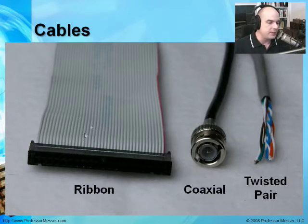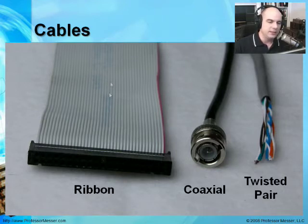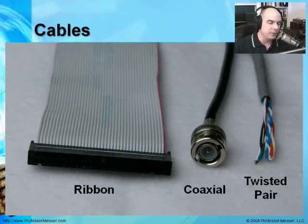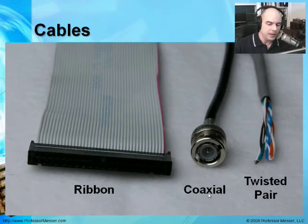Each one of these little bumps in the cable is a pin, and so we've got a lot of different pins going down this ribbon cable. This is often used inside of personal computers to connect hard drives and floppy drives. These days we've changed from a ribbon cable connection into more of a thinner SATA type cable, but you'll still see ribbon cables very often in a lot of systems.